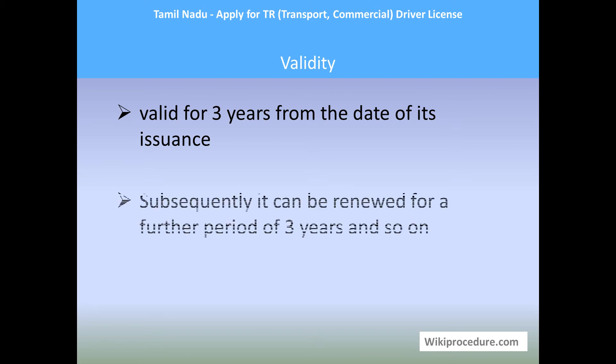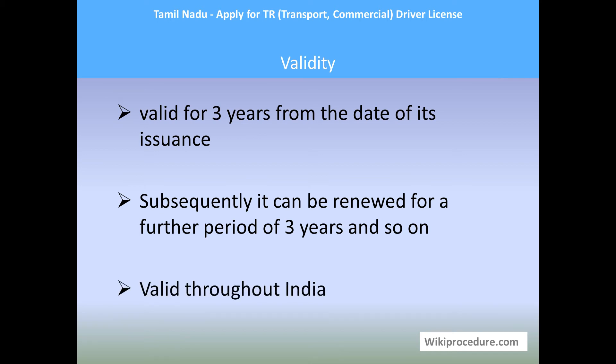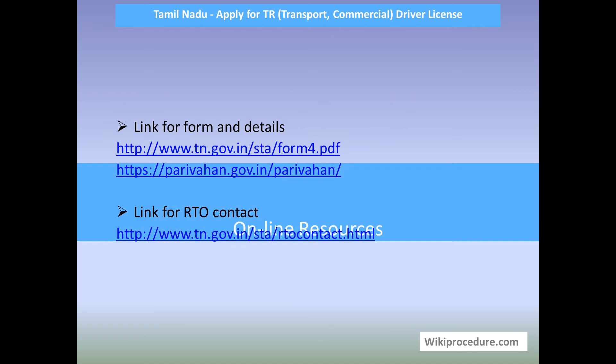This TR license is valid for three years from the date of issuance and can subsequently be renewed for a further period of three years, and so on. By contrast, a regular driving license is valid for 20 years. The TR license validity is a fixed three years and is valid throughout India to drive these categories of vehicles.